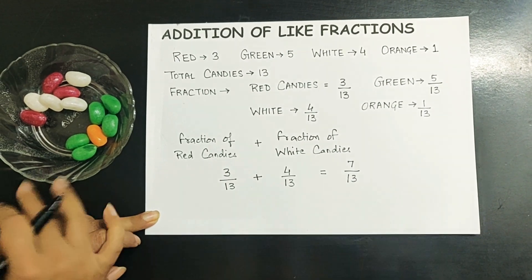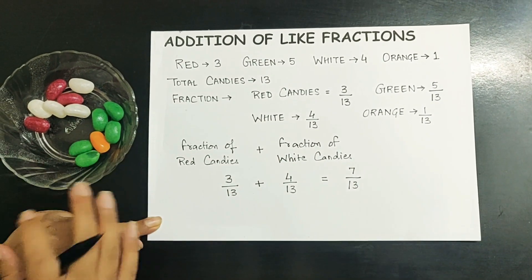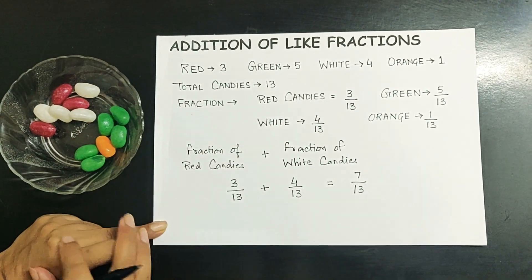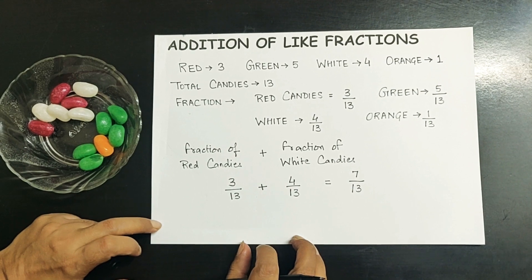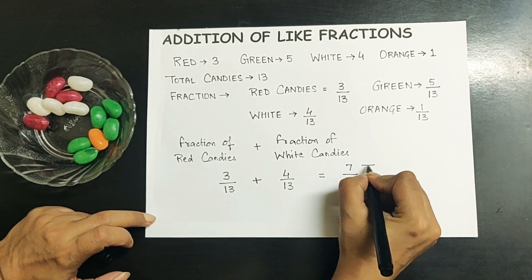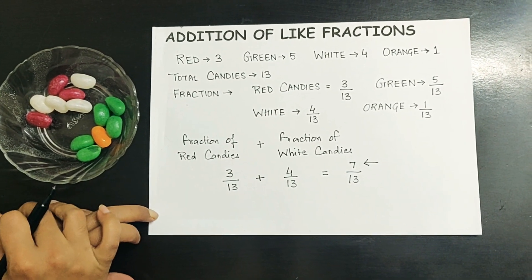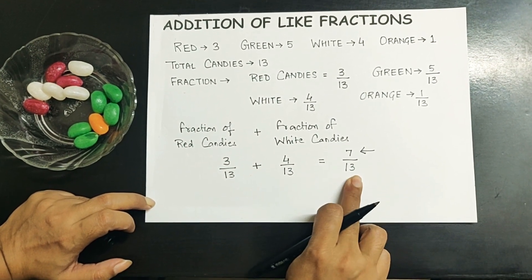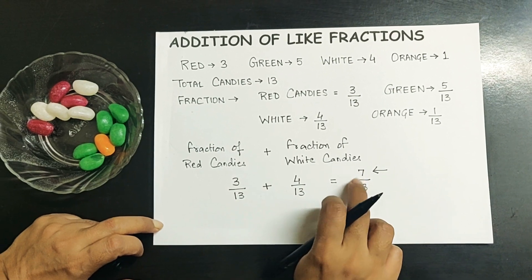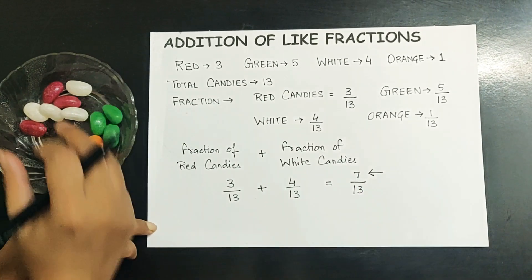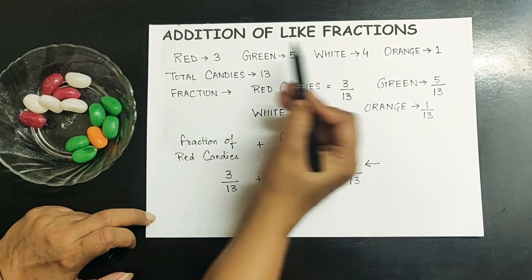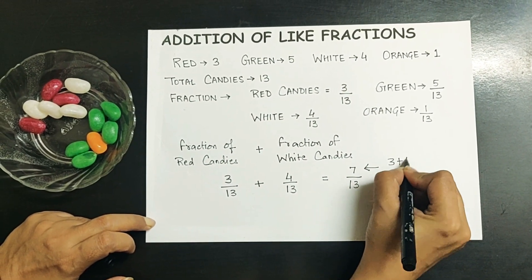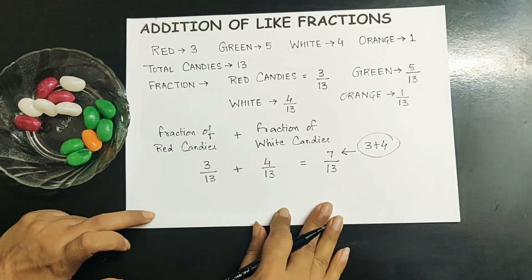What is the fraction of red and white candies out of the total candies? We can easily say it is 7 upon 13. Where does this 7 come from? The 7 comes from the numerator. If we look at the denominator, it remained the same, but the 7 comes because we have added the number of red candies and the number of white candies.